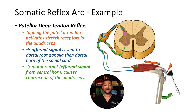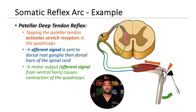Let's look at the patellar reflex. Tapping the patellar tendon activates stretch receptors in the quadriceps. This signal travels via the afferent neuron to the spinal cord, where it synapses with a motor neuron. The efferent output leads to contraction of the quadriceps muscle. This is a classic example of a somatic reflex.